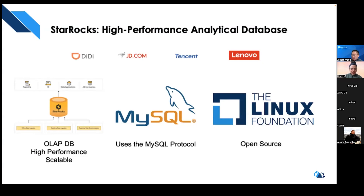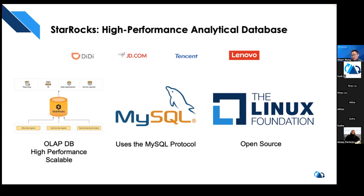Just three things to think about when you think about StarRocks, our open source OLAP database: high performance — in many cases three to five times, even up to ten times faster in query performance due to various engineering optimizations. We also support the ability to do joins on real-time data. And we're very scalable — we've got customers in the petabyte range using our database to feed their real-time systems.